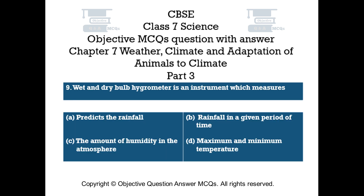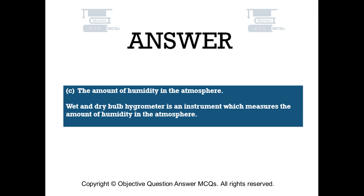Question number 9. Wet and dry bulb hygrometer is an instrument which measures: Option A: Predicts the rainfall. Option B: Rainfall in a given period of time. Option C: The amount of humidity in the atmosphere. Option D: Maximum and minimum temperature. The right answer is Option C. Wet and dry bulb hygrometer is an instrument which measures the amount of humidity in the atmosphere.